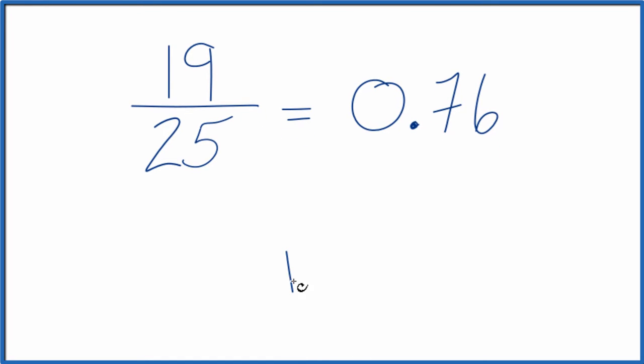The other way we could do it is we could take 19 and divide 25 into 19 longhand. 25 doesn't go into 19. Let's call it 190 and then we'll have to put a 0 and a point up here.